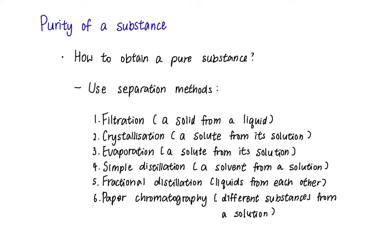Now, can we obtain pure substances by simple chemistry experiments? Absolutely. Six separation methods are introduced here. I will explain the processes of filtration, crystallization, evaporation, simple distillation, fractional distillation and paper chromatography and we can choose them according to which matter we would like to obtain from the substance.